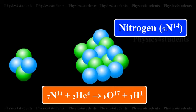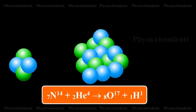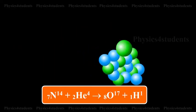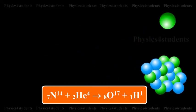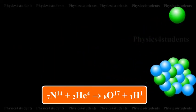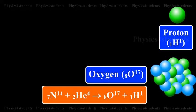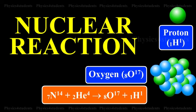When nitrogen was bombarded with alpha particles of sufficient energy, a rare isotope of oxygen-17 and a proton were formed. Nitrogen plus helium gives oxygen plus proton. This process is called nuclear reaction.